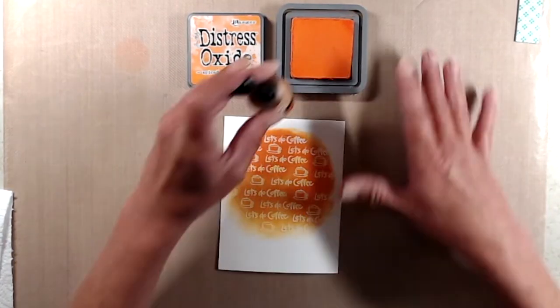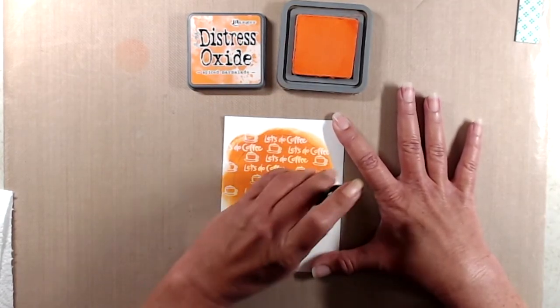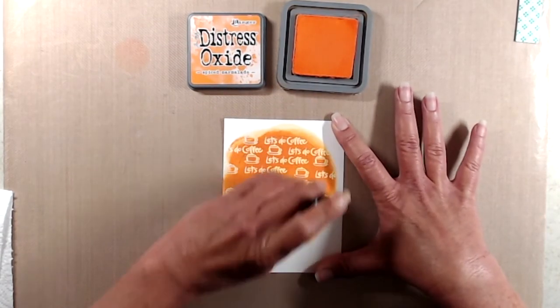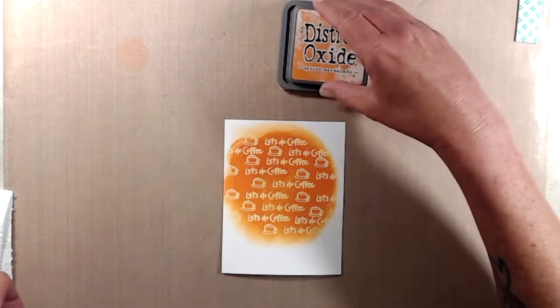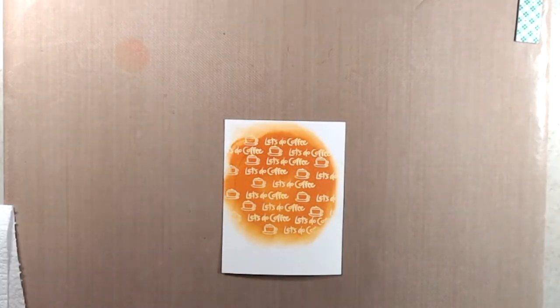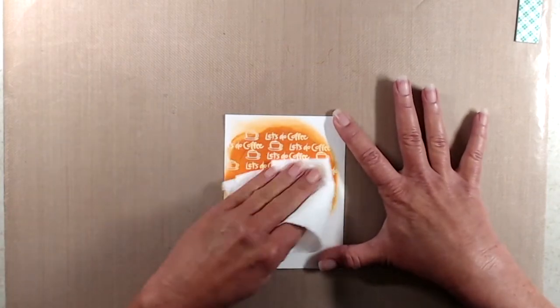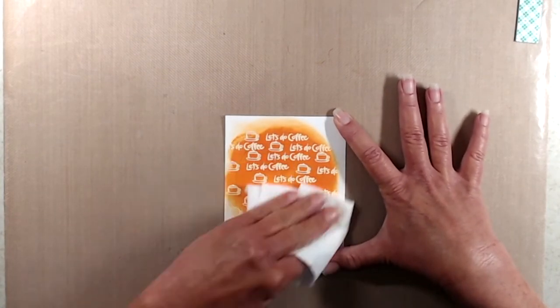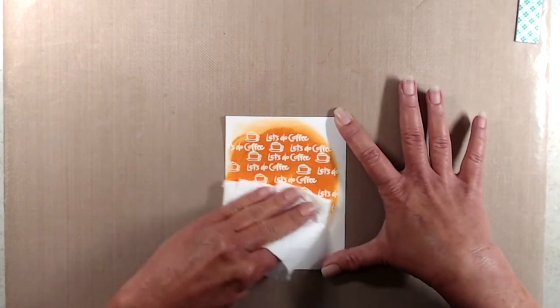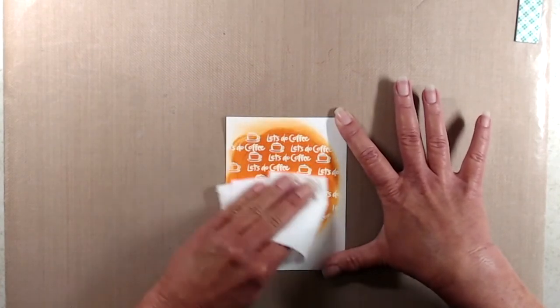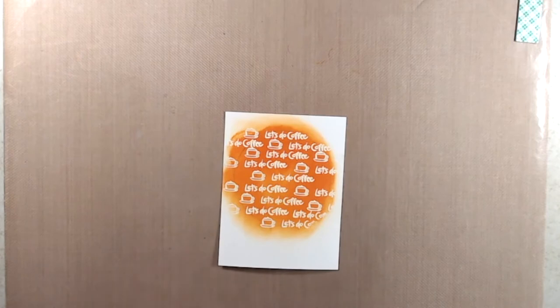After I was done with the embossing, I let it cool off a little bit and then I used Spiced Marmalade Distress Oxide ink with my mini ink blending tool to do a resist technique. Once I had all of that inked up and blended as much as I wanted, I used a clean paper towel just to buff off the embossing powder to make it look bright white again.